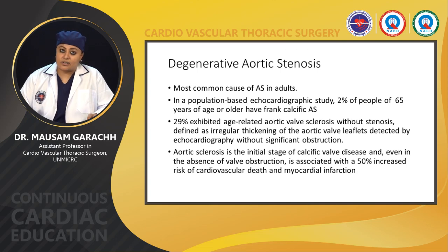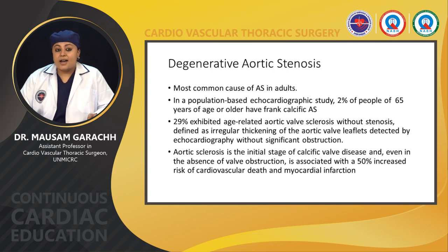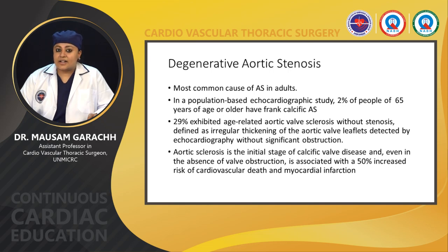Degenerative aortic stenosis is the most common cause in adults. In population-based echocardiographic studies, 2% of people aged 65 or older have frank calcific aortic stenosis, while 29% exhibit age-related aortic valve sclerosis without stenosis. Aortic sclerosis is defined as irregular thickening of the aortic valve leaflets detected by echocardiography without significant obstruction. Aortic sclerosis is the initial stage of calcific valve disease and is associated with a 50% increased risk of cardiovascular death and myocardial infarction.